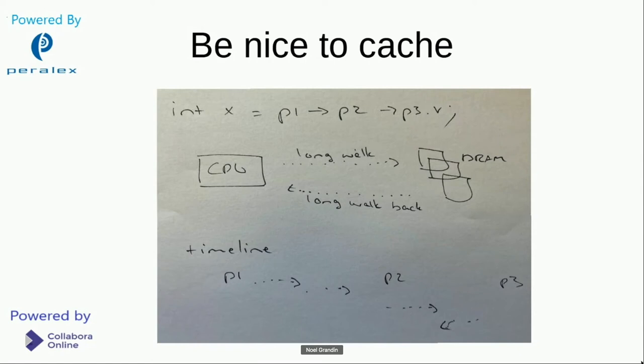For example, if you have an expression like int x equals p1, dereference it, fetch p2, dereference it, fetch p3, what you are doing is bouncing through memory. And every time you bounce through memory, you are probably triggering a fetch from DRAM, which is a long way from the CPU. It's a long walk.